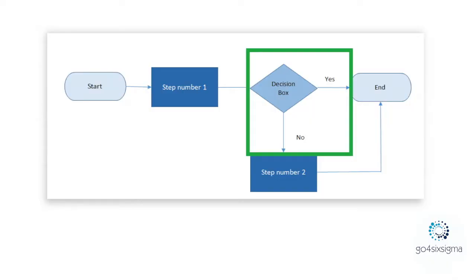There are also decision boxes, because sometimes the process has two flows. For example: is the approval needed? Yes — we go to another box. If the approval is not needed, we just go to a different process step. So please make sure you will add all the decision steps in your process map as well.